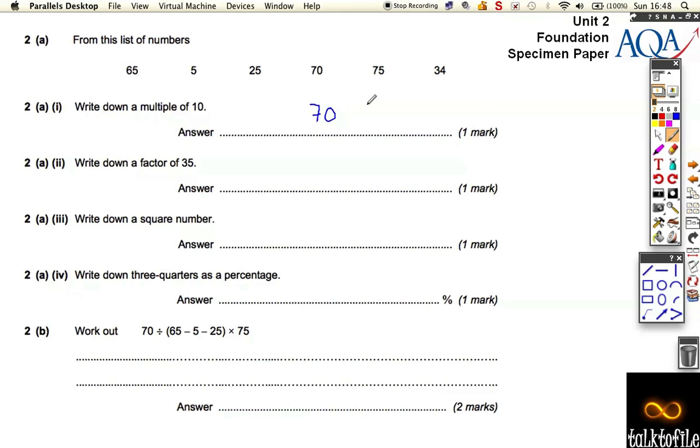A factor of 35. So multiples are in the times table, factors are all the numbers that fit into 35. So the only one there is 5. A square number, well that's 25 because it's 5 times 5.